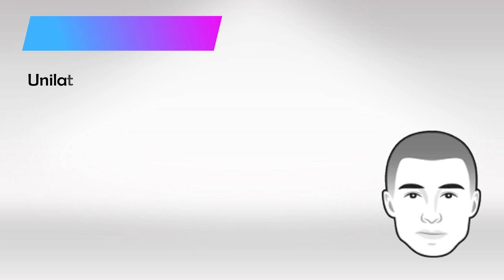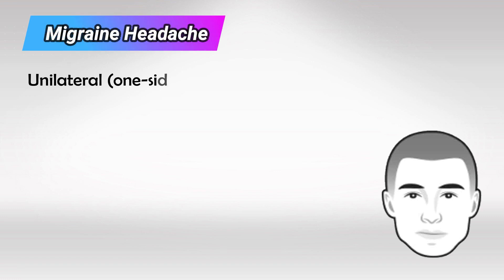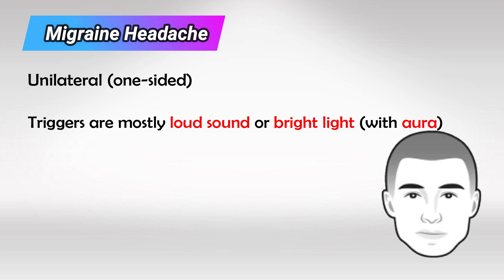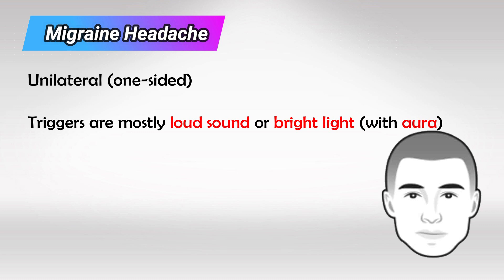The second type we have is migraine headache, and this is a unilateral headache, which means occurring in one side of the head. The trigger is most of the time loud sound or very bright light. Most patients experience an aura before having the symptoms, which is basically a weird sensation before the symptom starts. The aura is sometimes auditory, so the patient hears something like cracks, or olfactory, like the patient experiences that they smell something, for example burned tires, or any other variety of odd sensations.